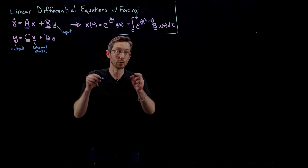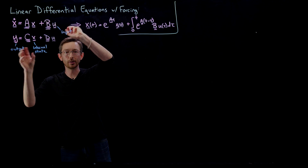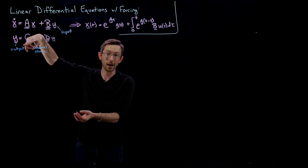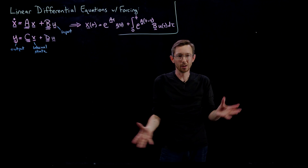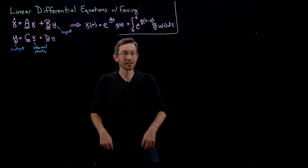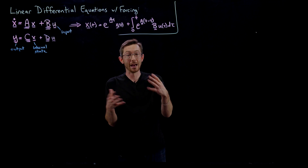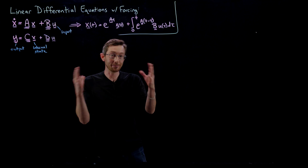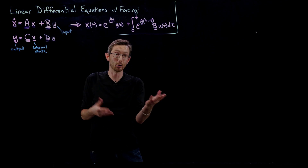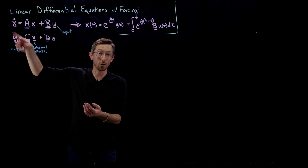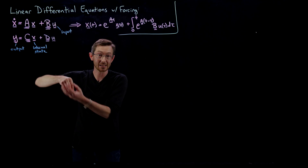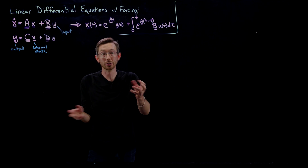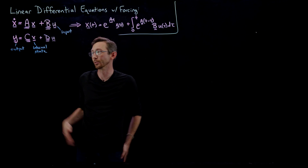These are input-output systems that have some internal state x that might be higher dimensional than either u or y. For example, in global health population dynamics, there are billions of people on earth, each with some health state. If we're trying to measure polio, I've got 7 billion states in x — whether they have polio or not — but I can't measure all 7 billion people. So my measurement is a massively smaller measurement of that very high dimensional internal state, and u would be my control intervention strategy.